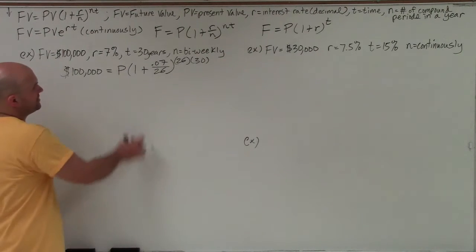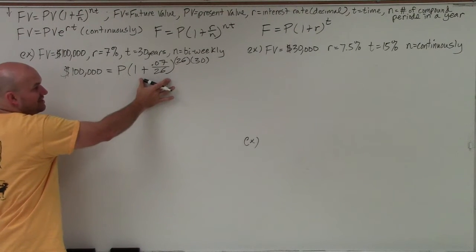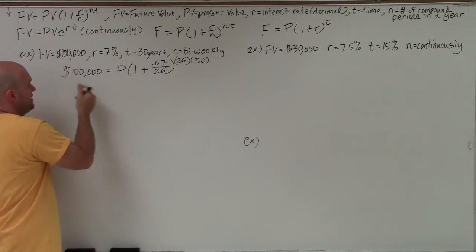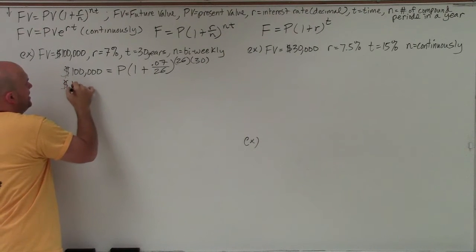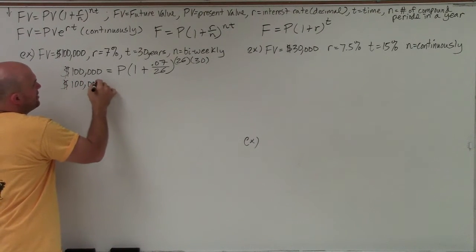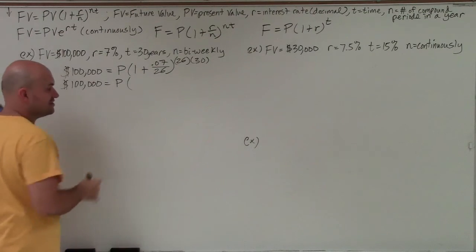So the main important thing that we want to do here first is I want to figure out what this value is. And then I'm going to divide P by that value. So I'm going to simplify this. And again, using my order of operations, I'm going to simplify what's inside the parentheses first.